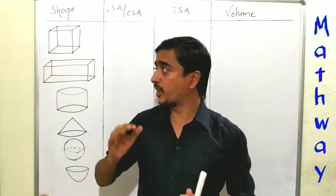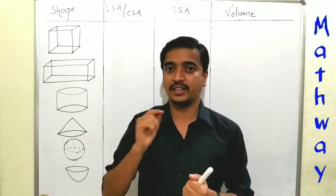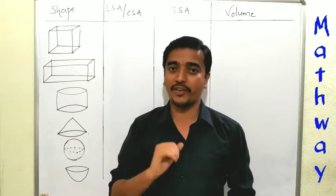Now let us see what are the formulas. LSA, lateral surface area. CSA, curved surface area. TSA, total surface area. And volume of the shapes.